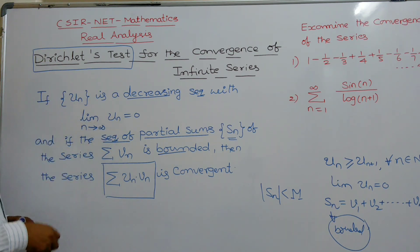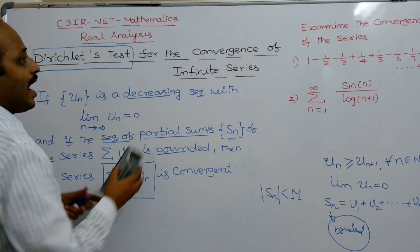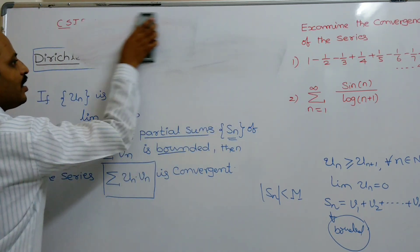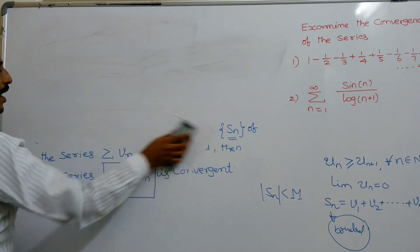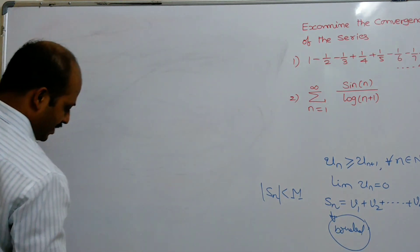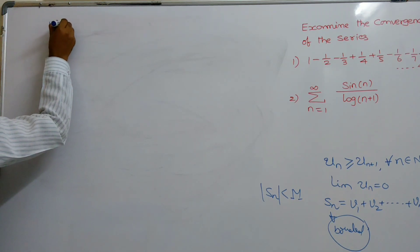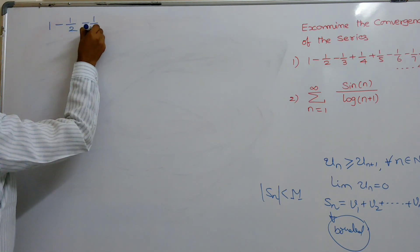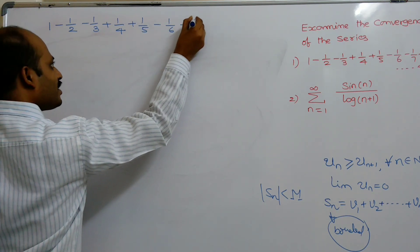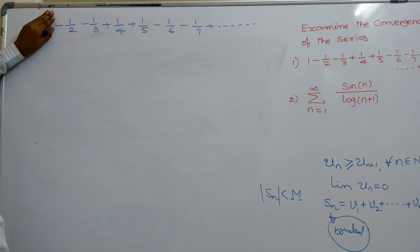This is one very important test. To understand it, we solve two problems using the Dirichlet test. Examine the convergence of the series: 1 minus 1/2 minus 1/3 plus 1/4 plus 1/5 minus 1/6 minus 1/7 plus and so on.